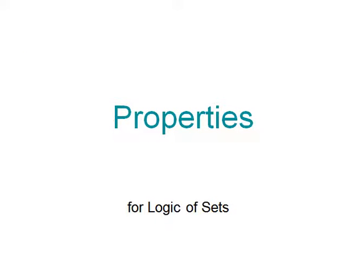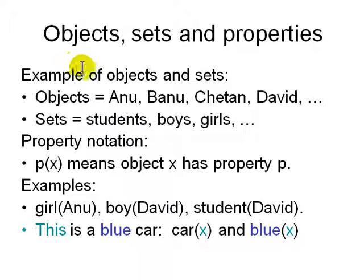Let's look at some examples. Example of objects and sets: objects would be, for example, a set of people - Anu, Banu, Chetan, David, ABCD, like that.